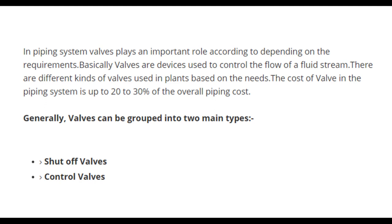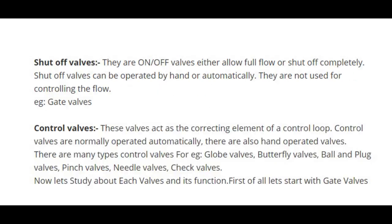Valves can be grouped into two main types: Number 1, Shut-Off Valves, and Number 2, Control Valves. Shut-off valves are on-and-off valves that either allow full flow or shut off completely. They can be operated by hand or automatically, and they are not used for controlling the flow. Examples of shut-off valves include gate valves.